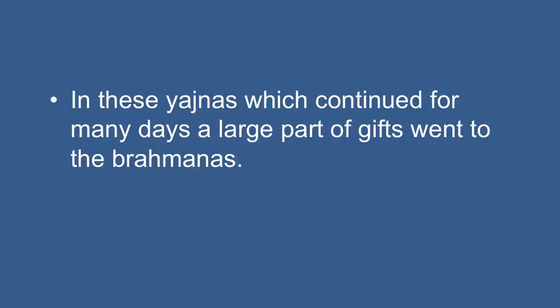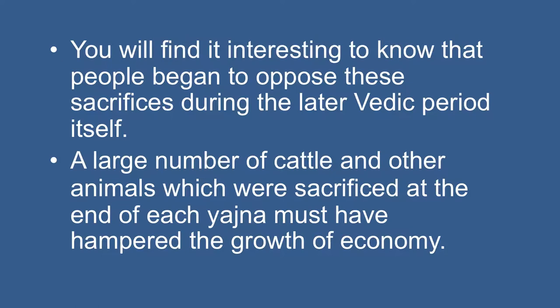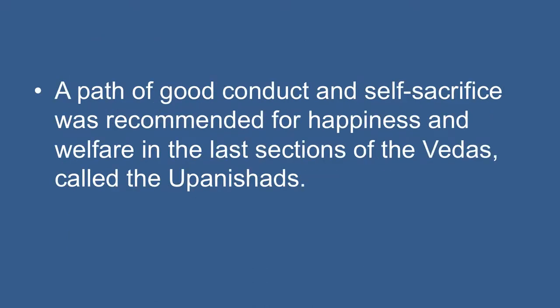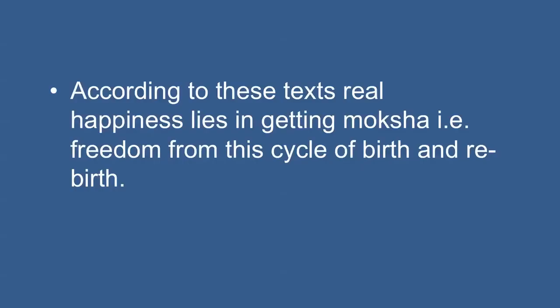In these Yajnas, which continued for many days, a large part of the gifts went to the Brahmans. The purpose of these Yajnas was twofold: firstly, it established the authority of the chiefs over the people, and secondly, it reinforced the territorial aspect of the polity, since people from all over the kingdom were invited. People began to oppose these sacrifices during the later Vedic period itself, as the large number of cattle and animals sacrificed hampered the growth of the economy. Therefore, a path of good conduct and self-sacrifice was recommended in the last section of the Vedas, the Upanishads, which contain the two basic principles of Indian philosophy: karma and the transmigration of the soul. Real happiness was said to lie in attaining Moksha, freedom from the cycle of birth and rebirth.